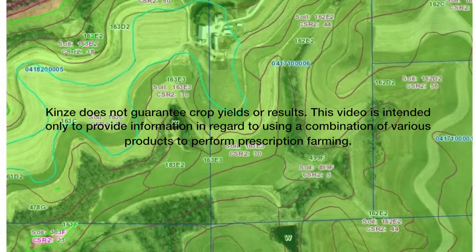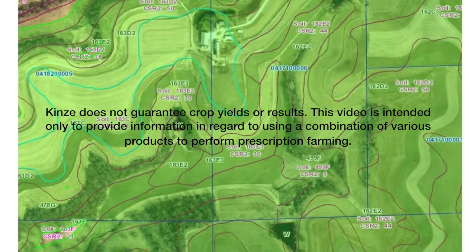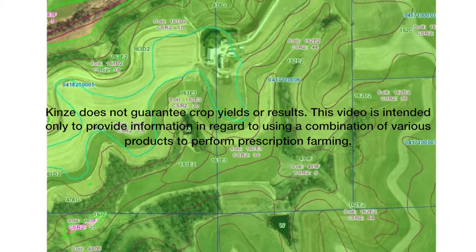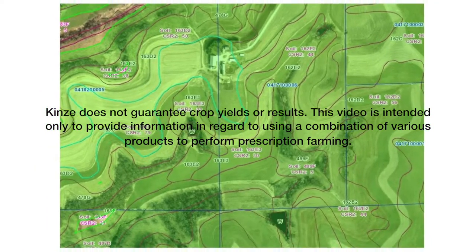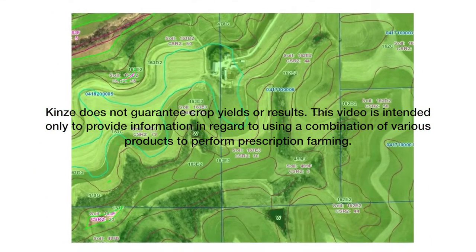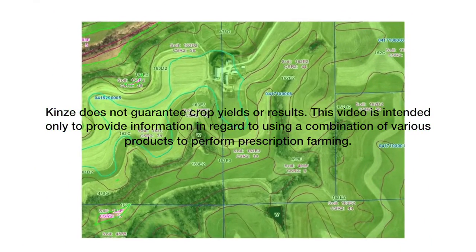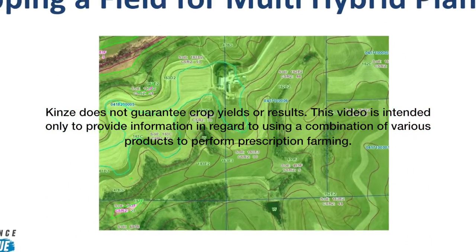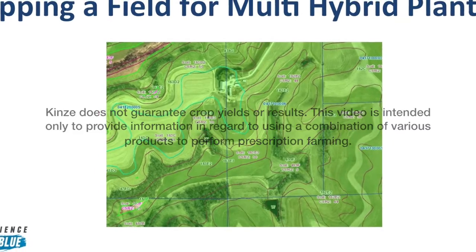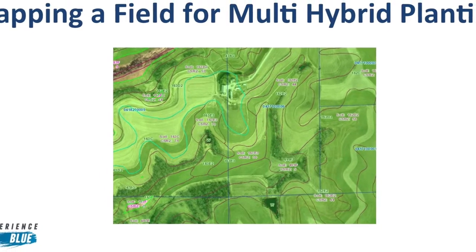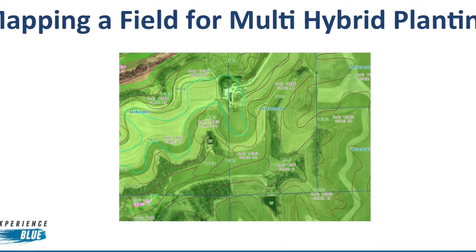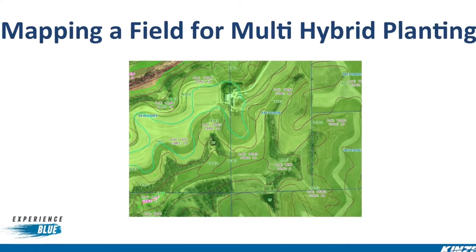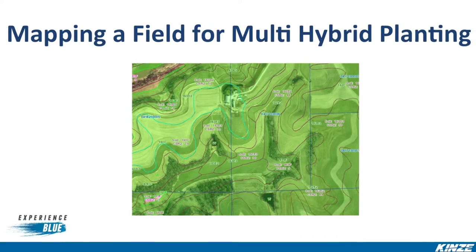The following online tutorial covers the basics needed to map your field for general prescription planting or multiple hybrid planting with Kinsey's 4900 Multi-Hybrid Electric Drive Planter. In this tutorial, the five basic steps needed to map your field will be covered.